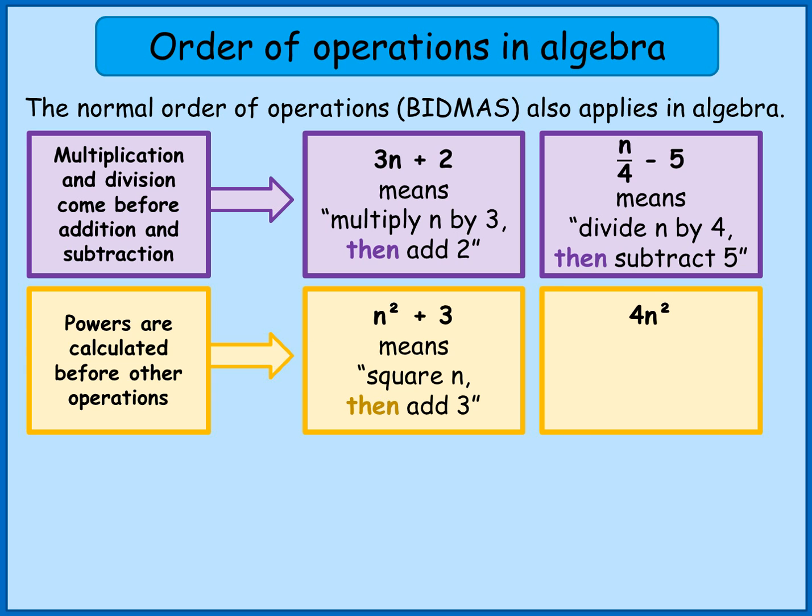And if I had something like 4N squared, now this is a tricky one, this is where some people make mistakes. 4N squared means 4 lots of N squared or 4 times N squared. Now because of the way BIDMAS works, the first thing I would do is square N and then I would multiply the answer by 4. I wouldn't do 4 times N and then square my answer and that's really, really important. So I'd square N then multiply by 4.